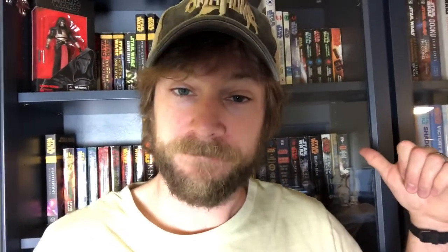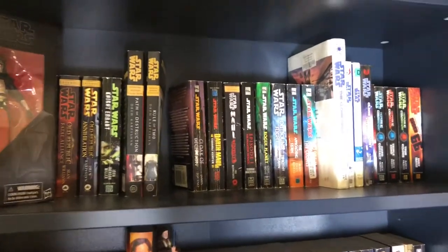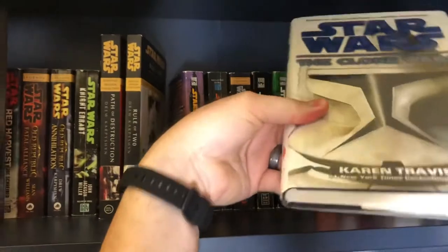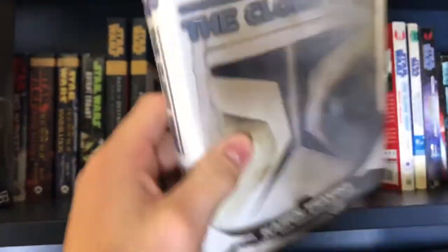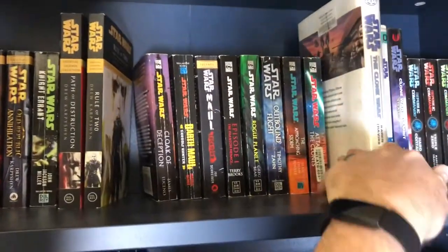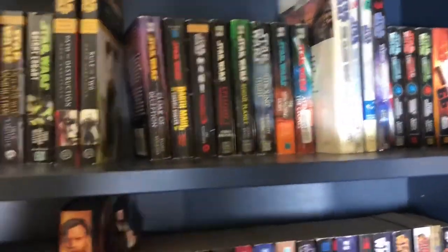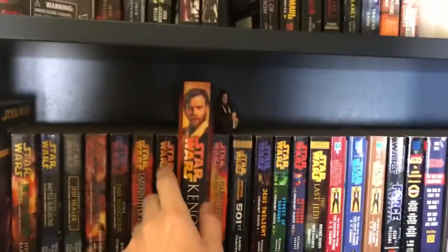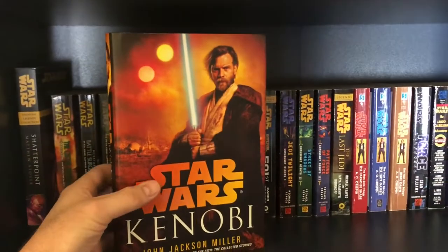Okay so the package that I got has 10 dust jacket covers so we're gonna go through and pick out 10 books. Starting with the Expanding Universe shelf I've got this hardcover but I think it's already got something on it. It does. It was an old library book I think that I got on eBay. The only other hardcover I have is Kenobi. Everything else is paperback so obviously I'm gonna protect this one.